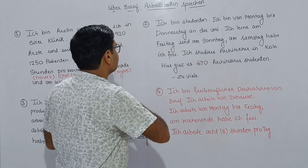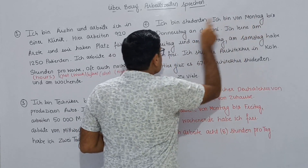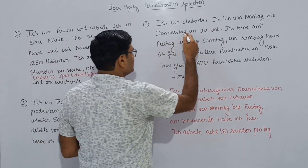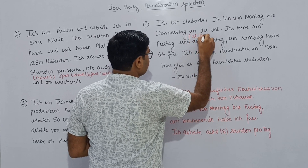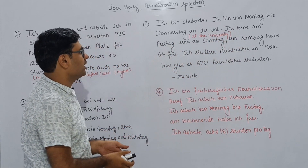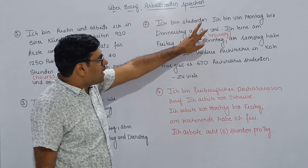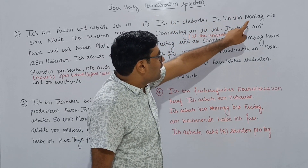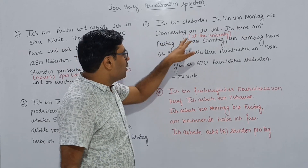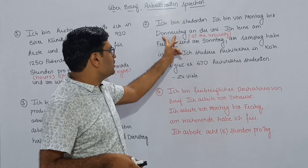Second one: 'Ich bin Studentin.' Student with '-in' at the end means she is a lady student — a girl. 'Ich bin Studentin. Von Montag bis Donnerstag an der Uni.' An der Uni means at the university. Montag is Monday, Donnerstag is Thursday. So: from Monday to Thursday she is at the university.